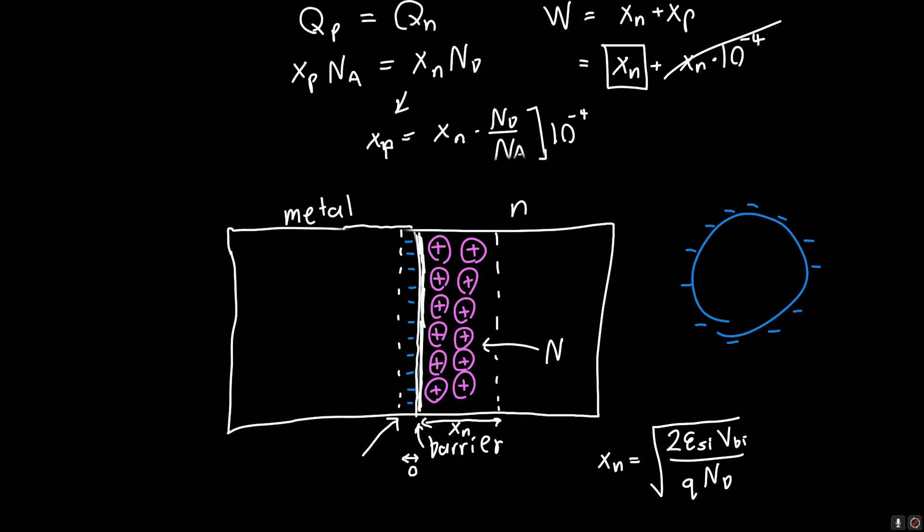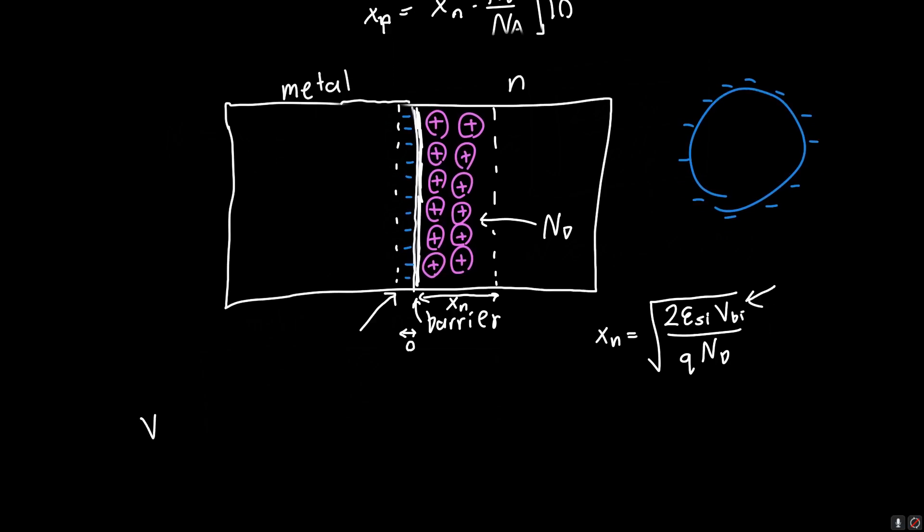This equation works for any one-sided junction. The subtlety here is this VBI. Remember, with the PN junction we calculated VBI as the thermal voltage Phi T times the natural log of NA times ND over NI squared.